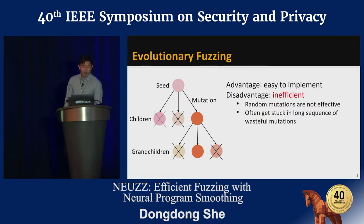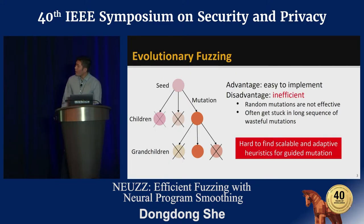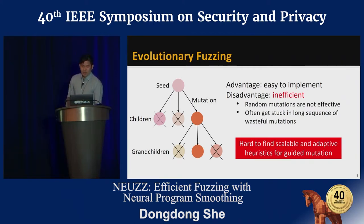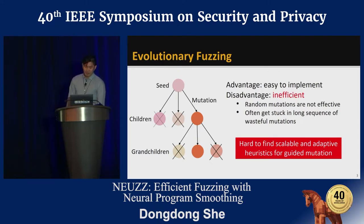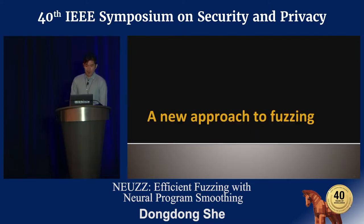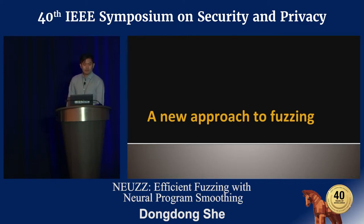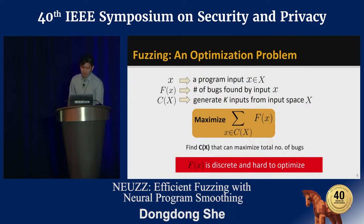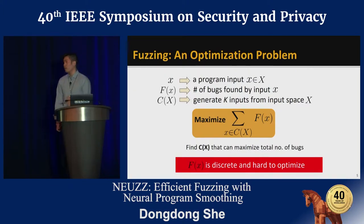In practice, it is hard to find scalable and adaptive heuristics for guided mutations. Many prior works tried to address this limitation in a different way, but without changing the fundamental fuzzing architecture. In this work, we consider fuzzing from a new perspective: an optimization problem.